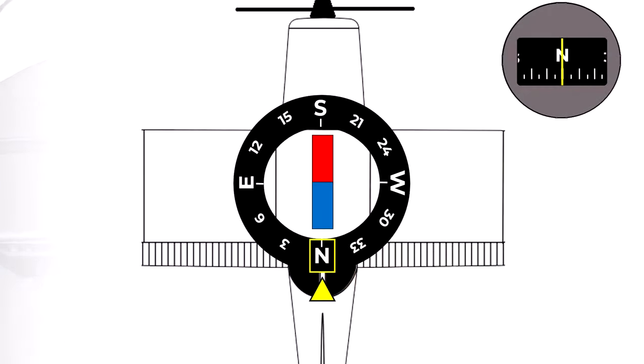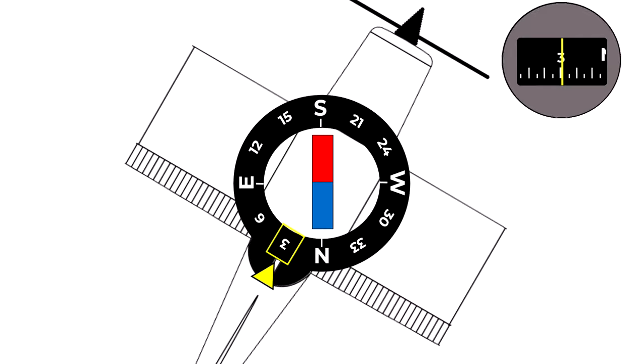In this example we can see the aircraft flying with the north heading correctly indicated in the compass. Here in the upper right corner is how the pilot would actually see the instrument.